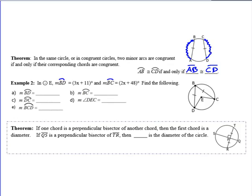Here's an example of how we would use that. In circle E, measure of arc BD is 3x + 11, and BC is 2x + 48. If I look here, BC and BD are arcs, but the chords that intercept them are marked congruent. That means I can set these two things equal to each other. So I can say 3x + 11 equals 2x + 48. Subtract the 2x over, that gives me x. Subtract the 11 over here, that gives me 37. So x equals 37.